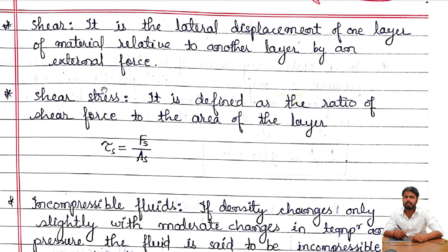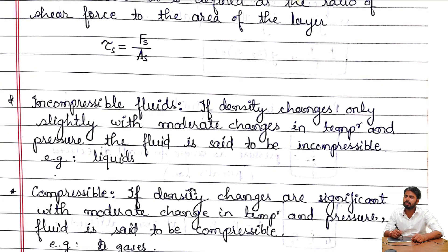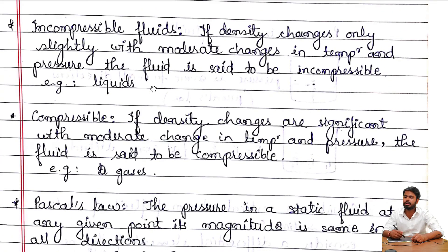Some definitions from the introduction part: Shear is the lateral displacement of one layer of material relative to another layer by an external force. Shear stress is the ratio of shear force to the area of the layer: τ = Fs/As. Incompressible fluid: if density changes only slightly with moderate changes in temperature and pressure, the fluid is said to be incompressible — like liquids. Compressible fluid: if density changes are significant with moderate changes in temperature and pressure, the fluid is compressible — like gases.